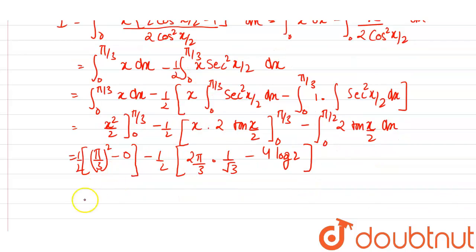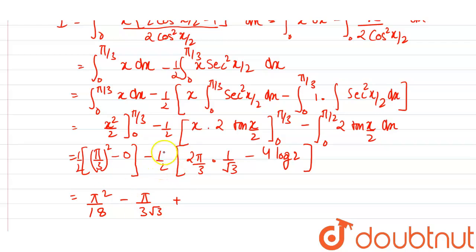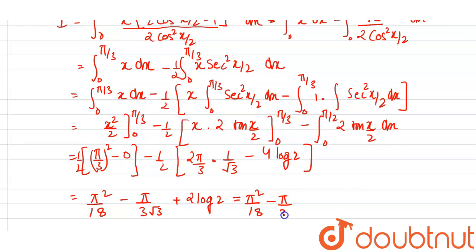Simplifying further, it is π²/18 minus π over 3√3. The 2 and 4 terms cancel to give 2, and minus minus becomes plus, so it is plus 2 log 2, which equals log 4. So the final answer is π²/18 − π/(3√3) + log 4.